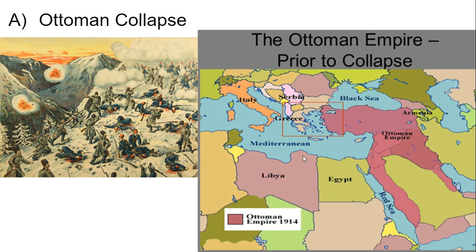The Ottoman Empire, as you hopefully remember, joined World War One on the side of the Central Powers, in order to try to gain back territory lost in the Balkans, regain authority over Egypt, and potentially gain back some territory from Russia in the Caucasus. In the end, the Ottoman Empire lost the war and was defeated. The Ottoman Empire then collapsed, and its various subject peoples declared independence, creating their own countries.